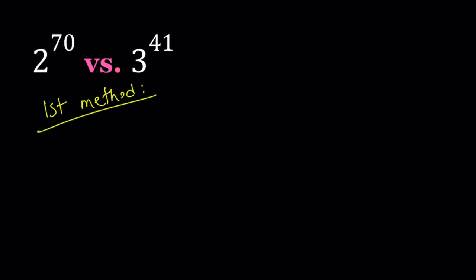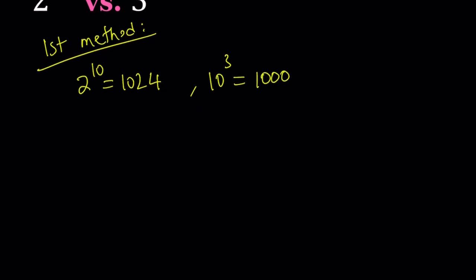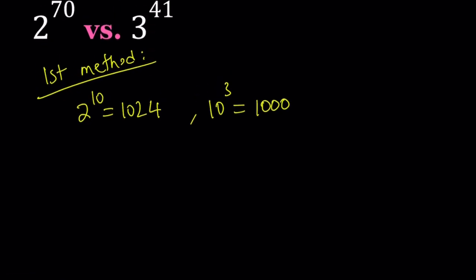For my first method, I'm going to consider two powers first. So I have 2 to the 10th power, which is 1024, and 10 to the power 3, which is 1000. Now obviously those numbers are pretty close. Now why do I use a 10? I'll tell you in a little bit.